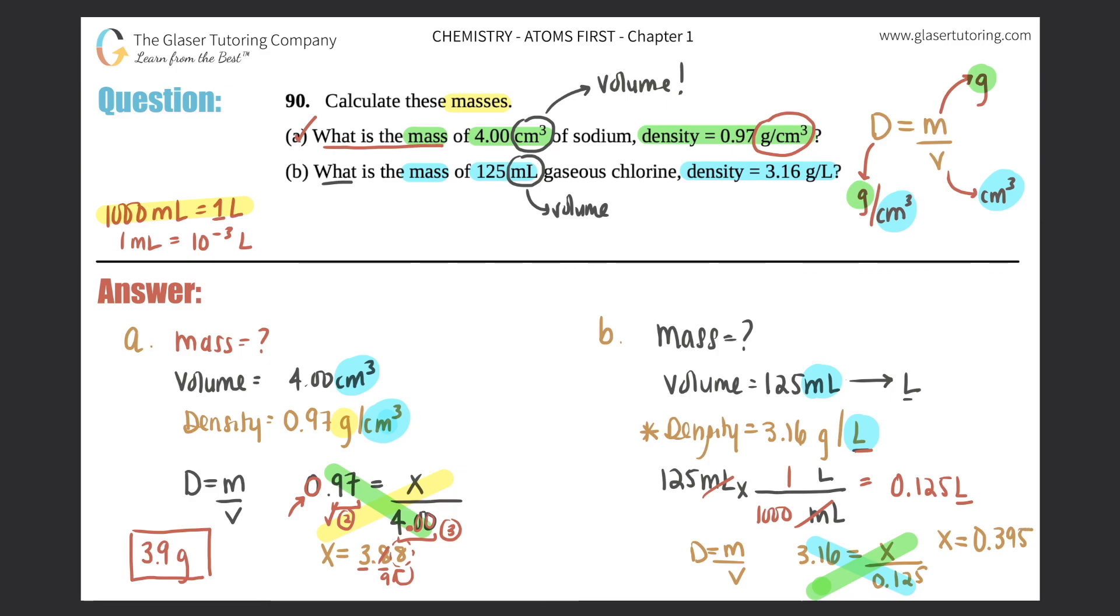And now we just got to use sig figs. The first number, 3.16, there are 3 sig figs here. All of them count. And this one, the 1, 2, and the 5 count, because leading zeros, this 0 right here, never counts. So my answer should have 3 sig figs.